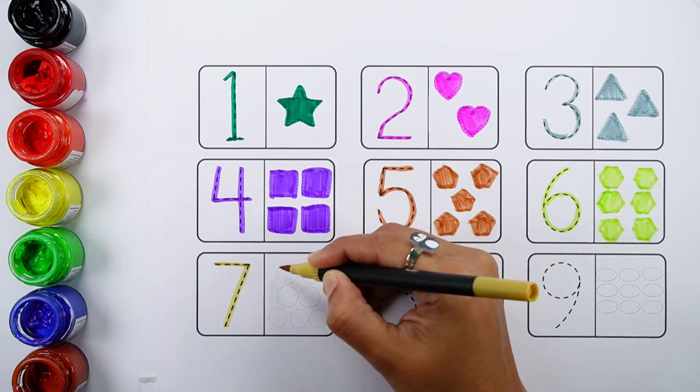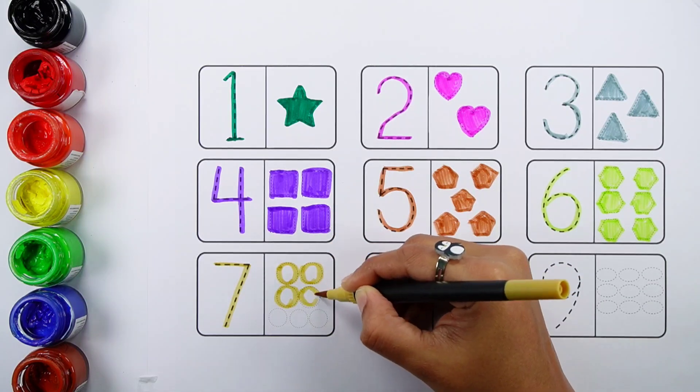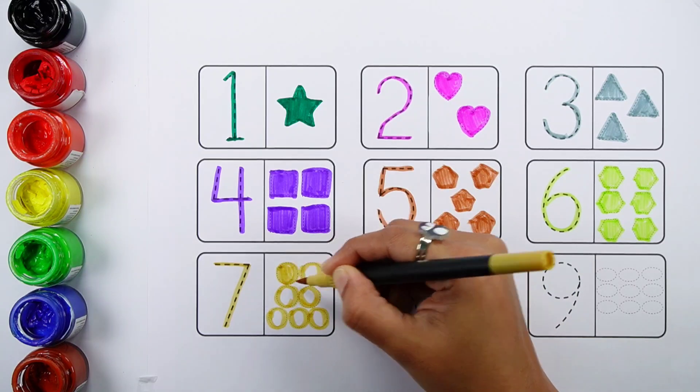Number seven. One, two, three, four, five, six, seven. Seven circles.